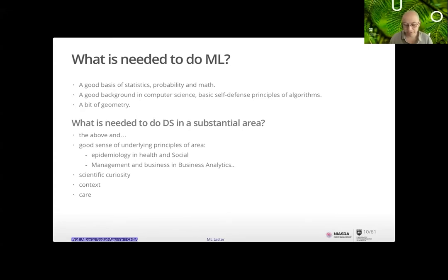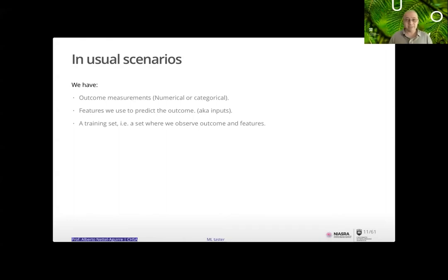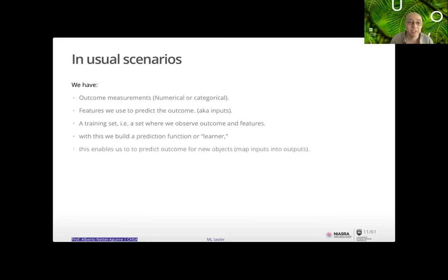In typical scenarios we will have an outcome — numerical or categorical — and variables, features, or inputs we want to use to relate to or predict that outcome. You should have a training set where you observe outcomes and features to build your prediction function or train your learner. The idea is it will tell you something about other data, enabling prediction for new inputs, and then you have a test set to evaluate performance.